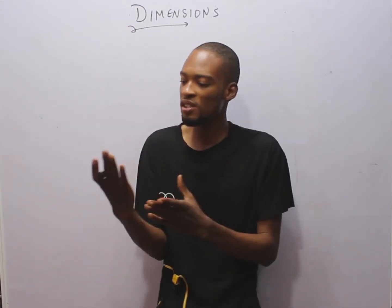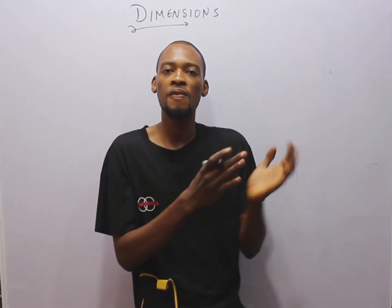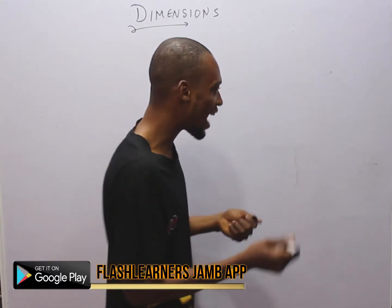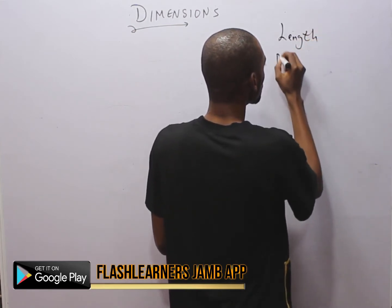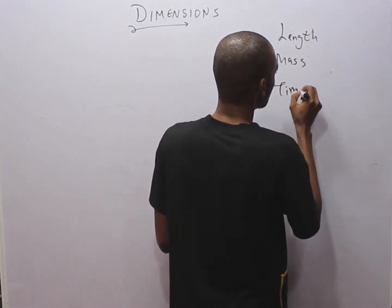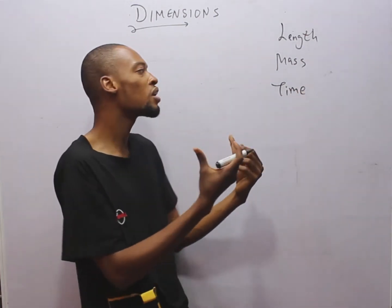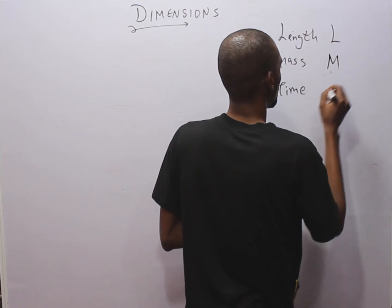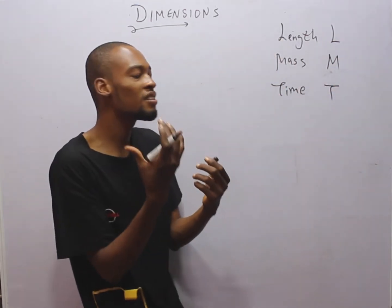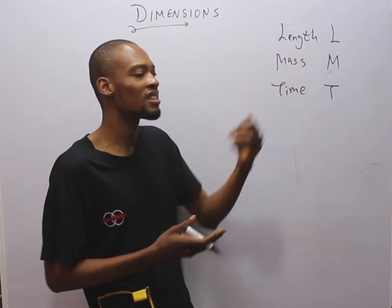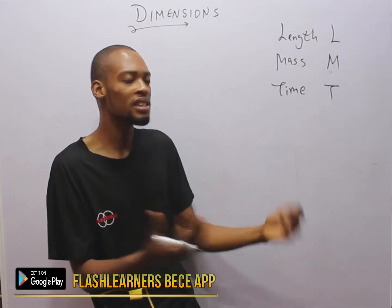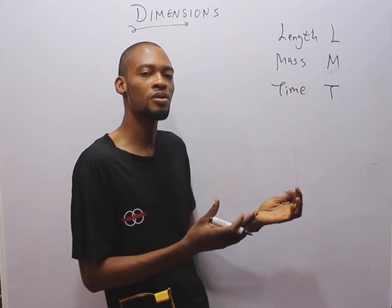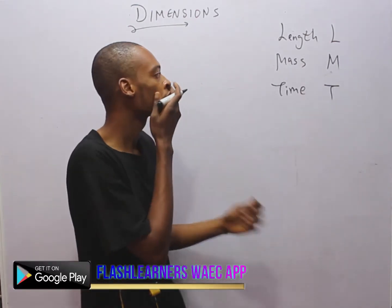Meanwhile, derived quantities are gotten from fundamental quantities, and derived units are gotten from fundamental units. The top three fundamental quantities are length, mass, and time. These quantities have their dimensions — a way of representing them. The dimension for length is L, mass is M, and time is T. Dimensions are different from units: the unit of length is meter or kilometer, mass is kilogram, and time is seconds.